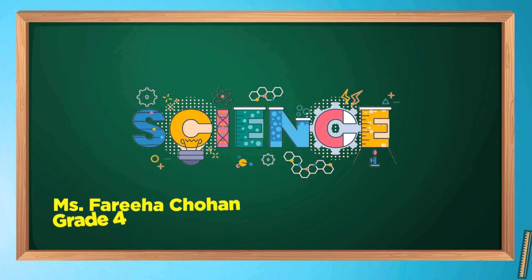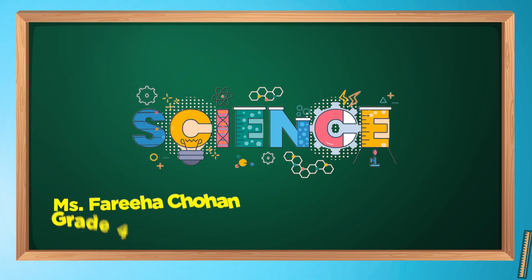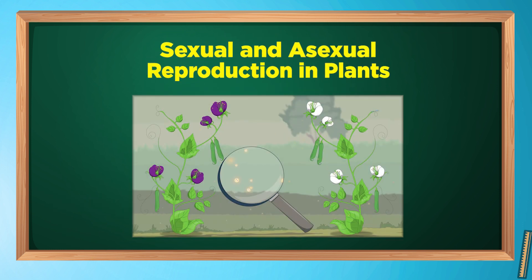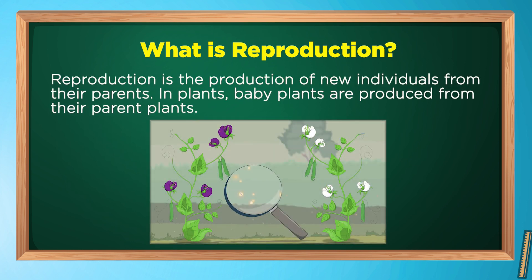Hello everyone, welcome to BSU YouTube channel. In today's lesson we will learn about sexual and asexual reproduction in plants. For a moment, think about what is reproduction. Reproduction is the production of new individuals from their parents. In plants, baby plants are produced from their parent plants.